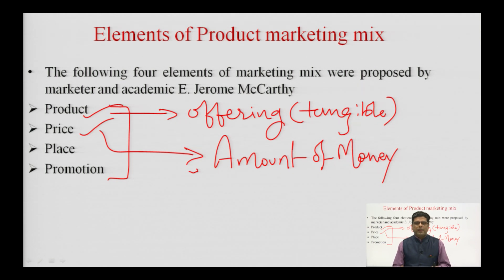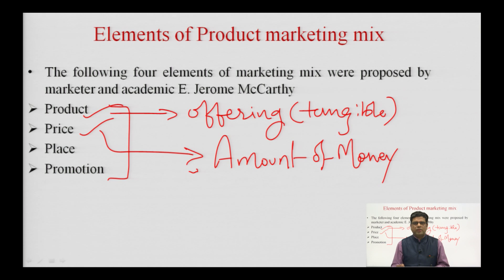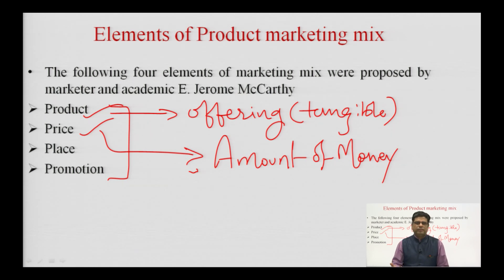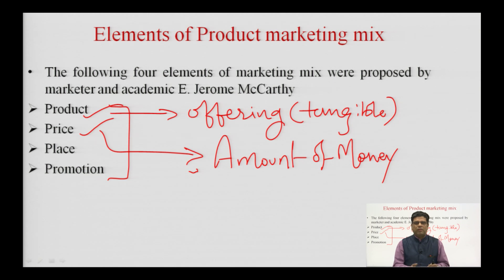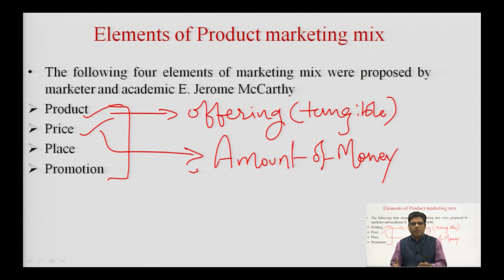In case of a service, I do not take anything tangible back home. A product is a tangible thing which we take ownership of when we pay the price. While in case of a service, when we pay the price, we get only the experience. For example, when we visit a cinema hall, purchase a ticket, sit for 3 hours, and watch the movie — we come back with just the experience. The chairs stay there, the screen stays there. In a service, it is the experience part that is dominant.